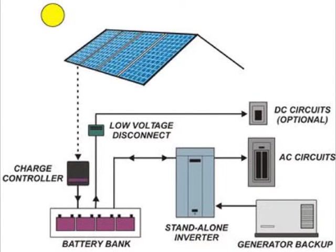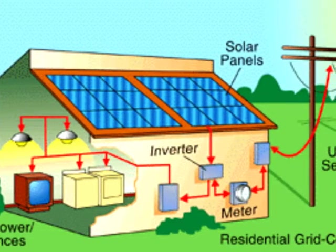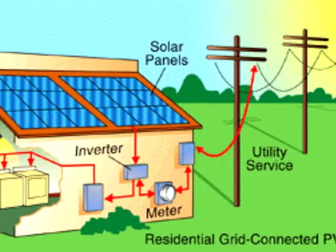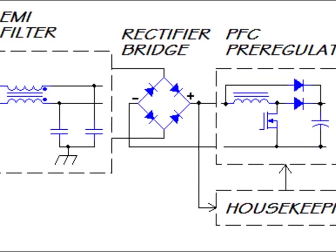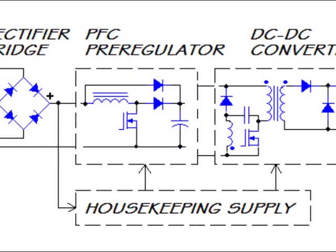They are used in standalone photovoltaic systems in order to prevent batteries from discharging through the solar panels at night, as well as in grid-connected systems containing multiple strings connected in parallel. Schottky diodes are also used as rectifiers in switched mode power supplies.